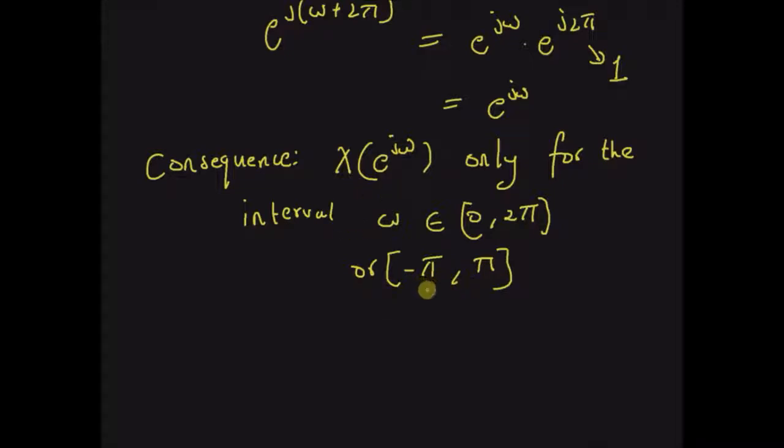Once you know X(e^jω) along 0 to 2π, along this line, then you can just repeat the DTFT for the rest of the real line.